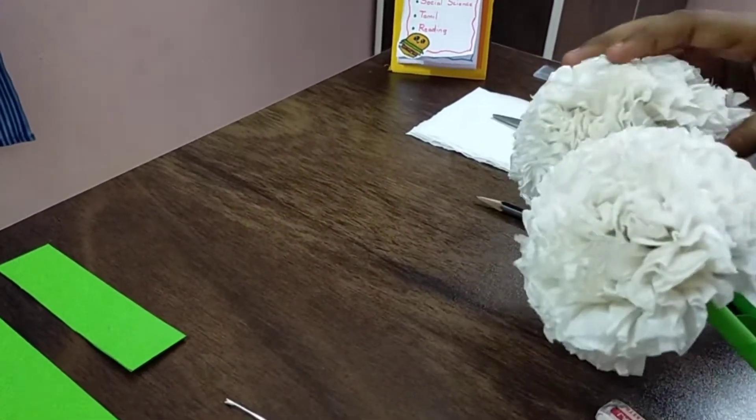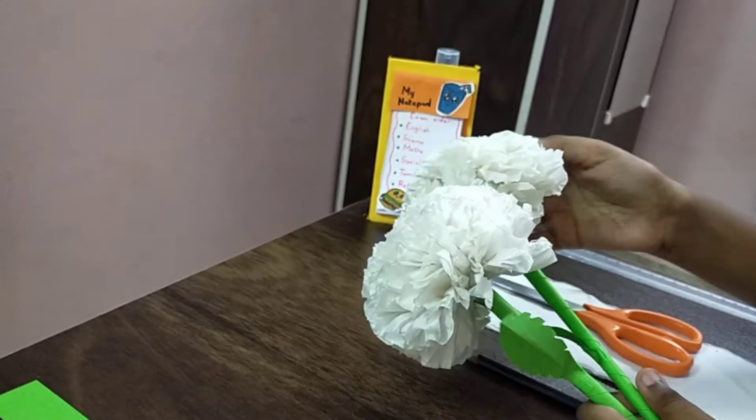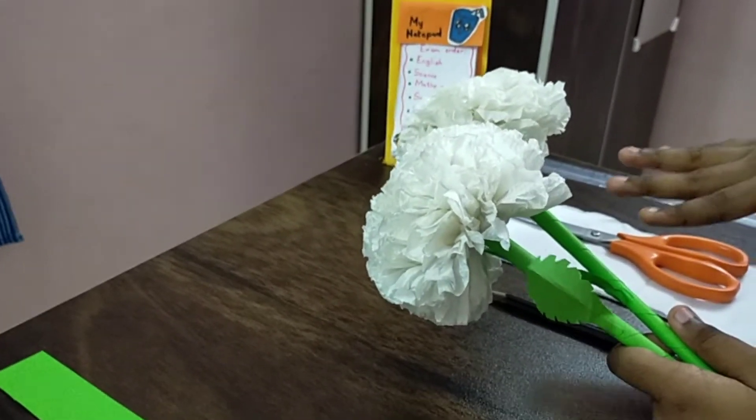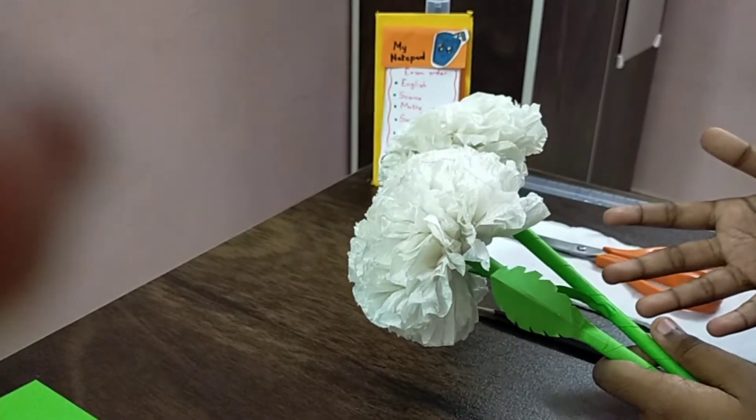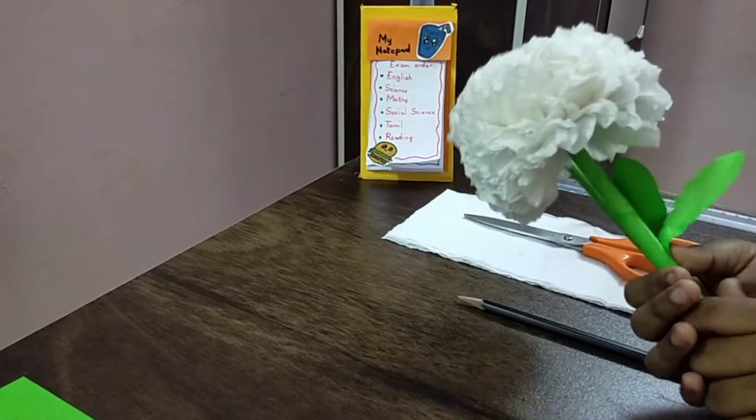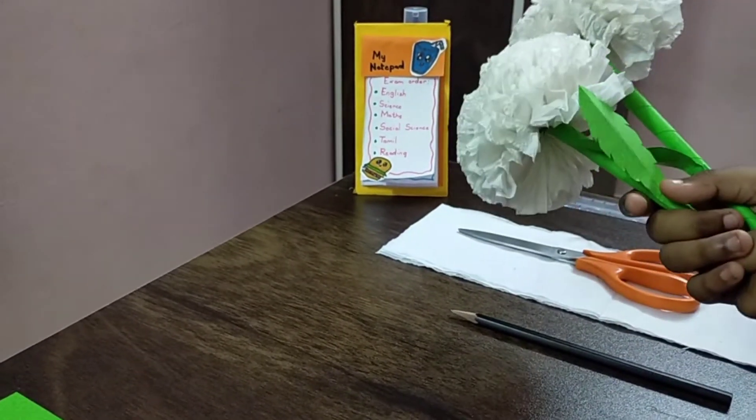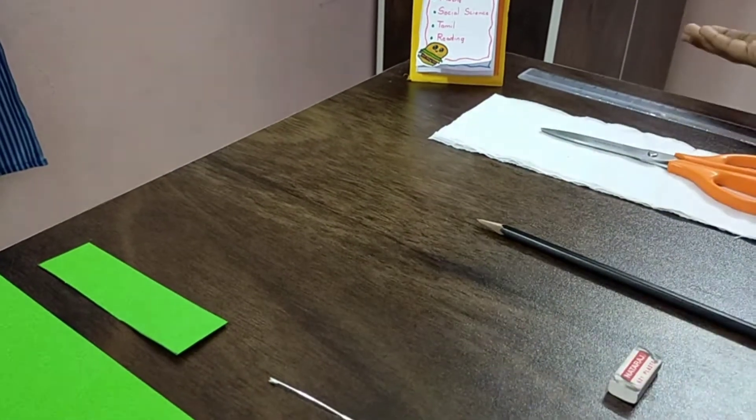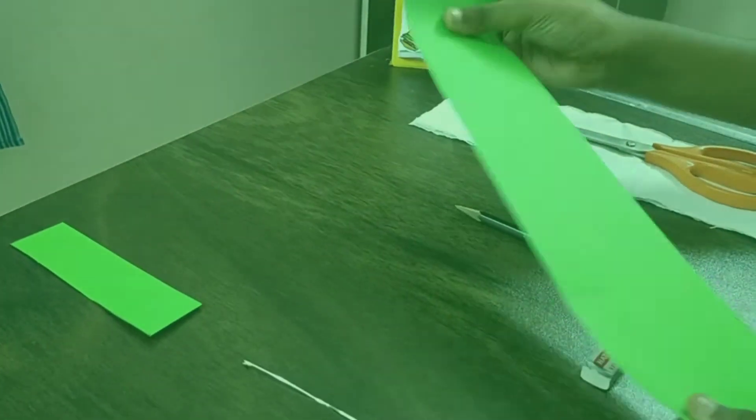And one more tip - if you want to do this in another color, you can use crepe paper. It's also thin like tissues and they're available in all colors too. But look for non-faded ones because some of them get faded when they're kept in the open. So let's get started.